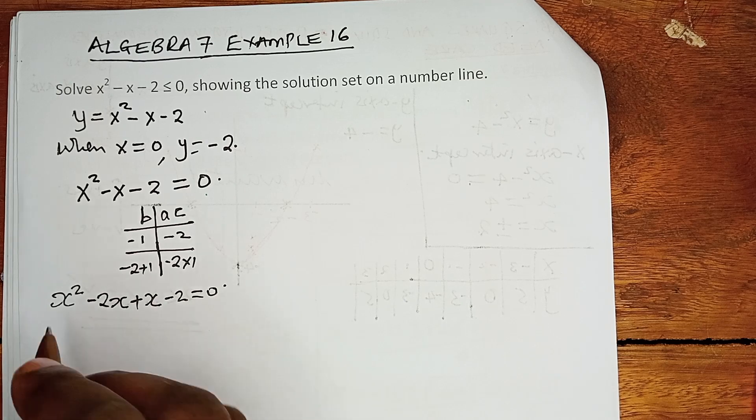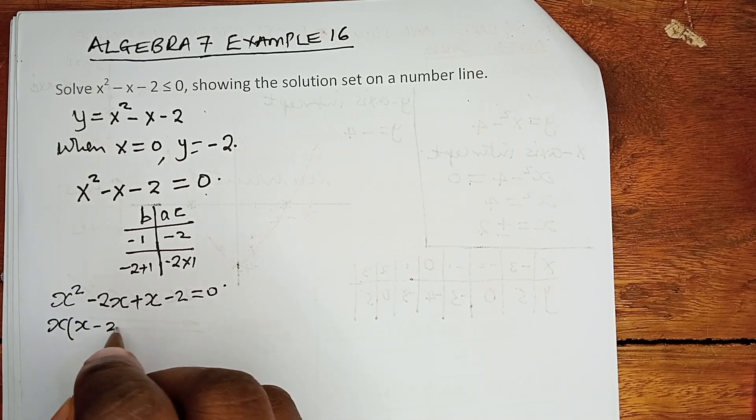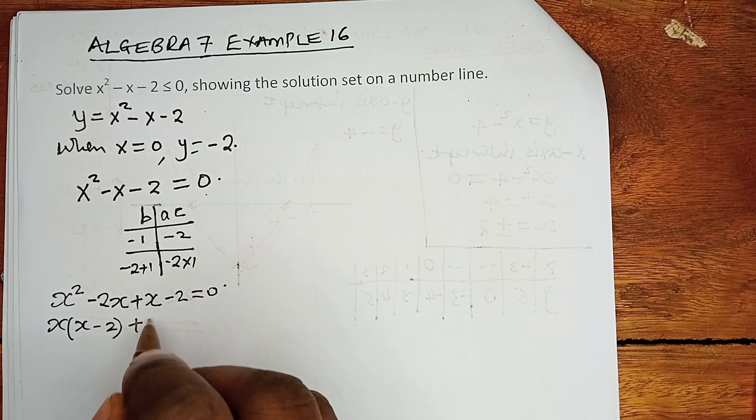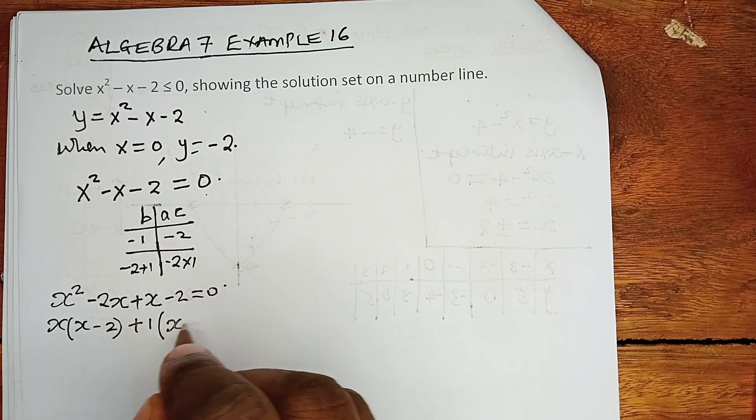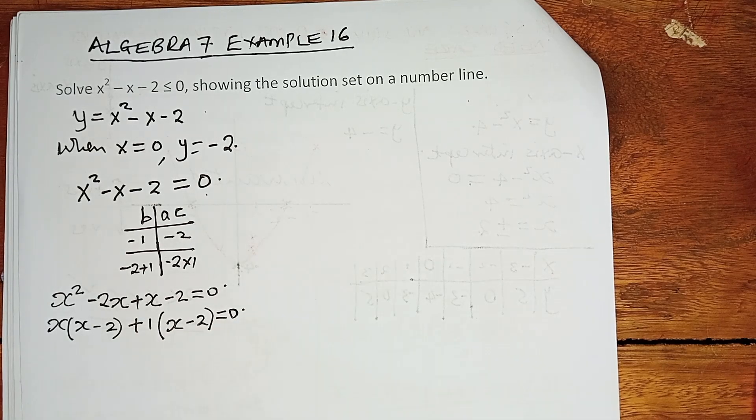So we have x squared minus 2x plus 1x minus 2 equals 0. What is common in the first two? x is common, x minus 2, and then plus 1, which is common, x minus 2 equals 0.